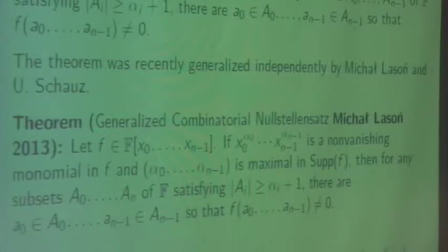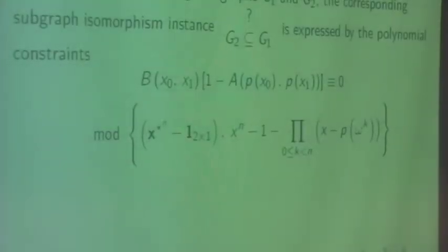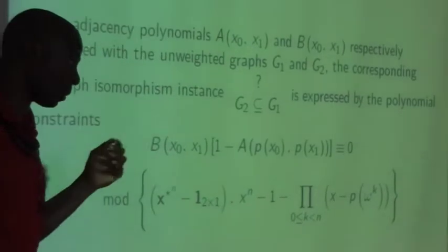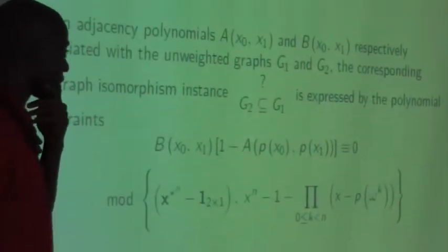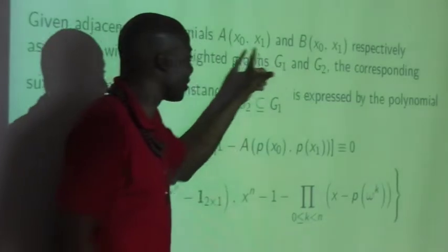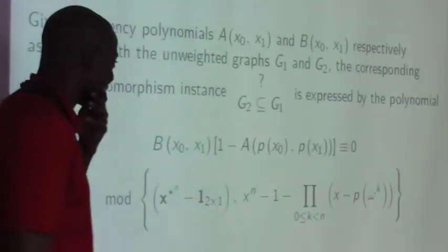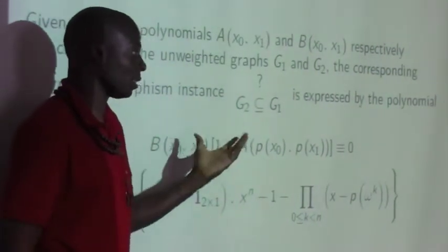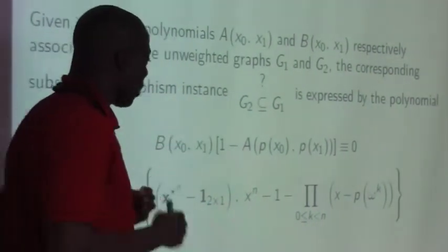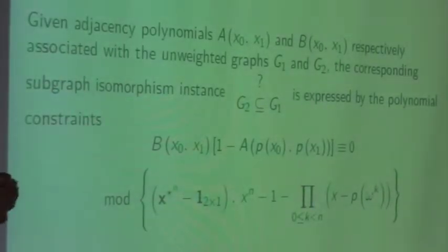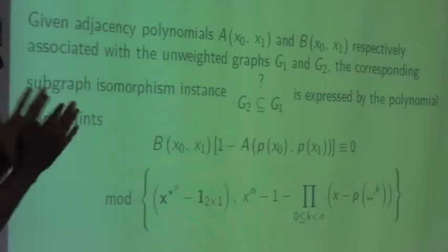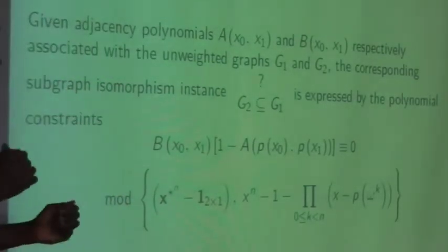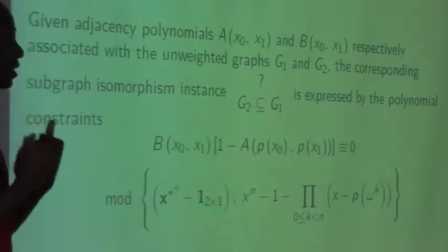What we want to do is use Noga Alon's technique to solve subgraph isomorphism. You give me two graphs — and remember, we can encode graphs using polynomials. You give me two graphs and ask: does G1 contain G2? I want to expand some polynomials to find out whether the answer is yes, and I want to find the smallest possible polynomial to expand. You don't want a polynomial that is too large.